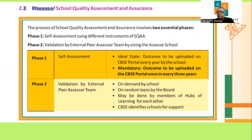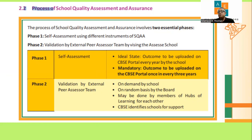Phase two is done by an external team — either on demand, where the school requests the external agency to come and inspect, or CBSE can send a random inspection. It can be done by hubs of learning where you collaborate with a neighborhood school. CBSE can also identify schools that require support. There will be both an internal assessment and an external assessment in these two phases.